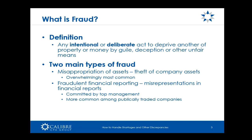Then you have fraudulent financial reporting — that's a misrepresentation in financial reports. These are more commonly committed by top management, more common among publicly traded companies, and get much more press. For example, situations like Enron or WorldCom committed fraudulent financial reporting in an effort to increase their stock price. That's not really relevant to the nonprofit world we're discussing today. What we're going to talk about is misappropriation of assets and some controls we can put into place to stop that.